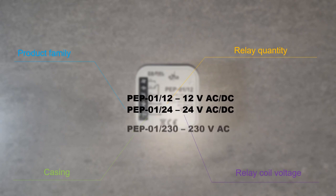The PEP01-230 relay is part of the electromagnetic relays family. The coil voltage versions of 12V AC/DC and 24V AC/DC are available as well.